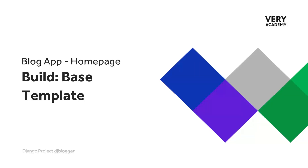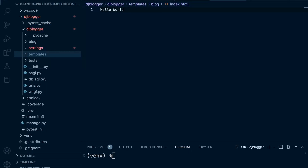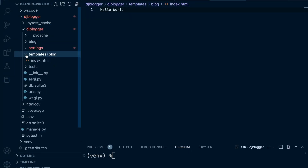So here we're going to build a base template that's going to be included in every single page that we create, which means we don't need to repeat some of the basic markup needed in every single HTML page. If you watched the previous tutorial, we already created our template folder and tested that this folder works correctly with our view.